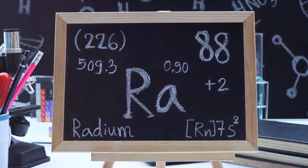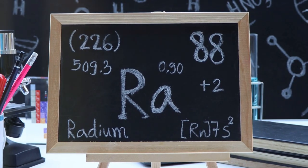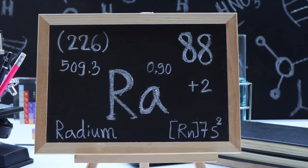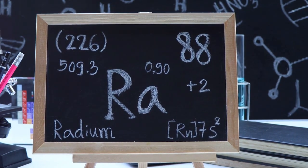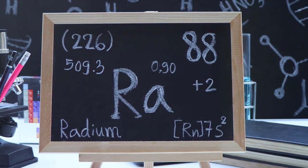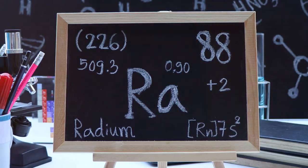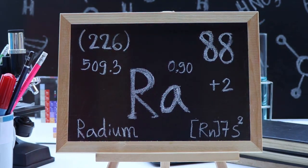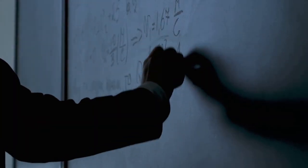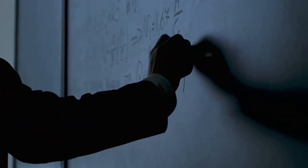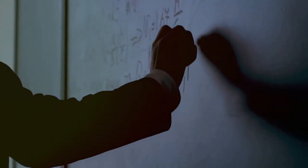Radiocarbon dating, also known as carbon-14 dating, is a method used by scientists to determine the age of organic material. This technique relies on the principle of radioactivity, the spontaneous decay of unstable atomic nuclei over time.